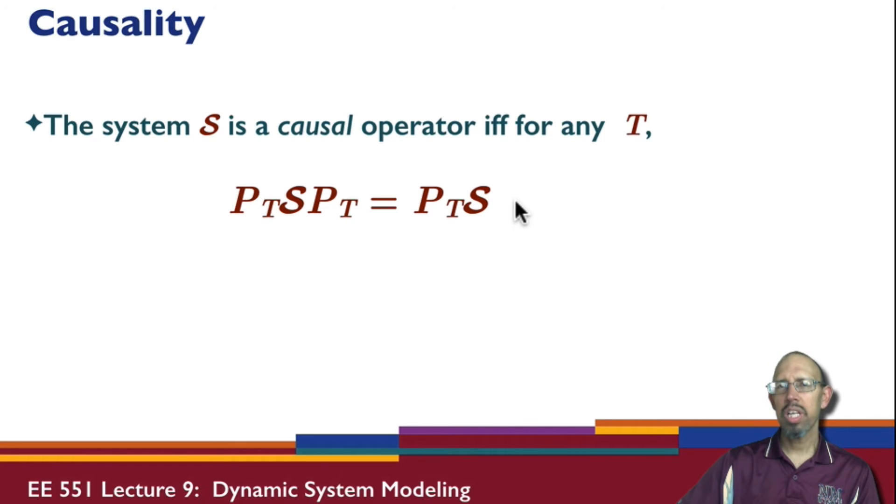We have this relationship. What is this relationship saying? These are two operators operating on input signals. This one says I'm going to take my system S, operate on the signal, and then operate on the signal by the truncation operator. This one says I'm going to first truncate my input and then do the rest of that stuff. And if these two signals, if I apply an input to both of these two systems and I get the same outputs, then we have a causal system.